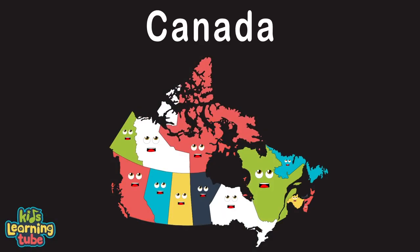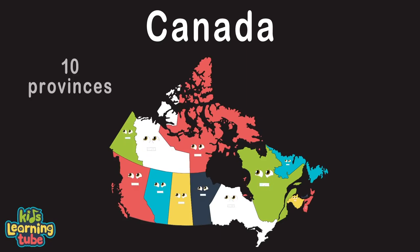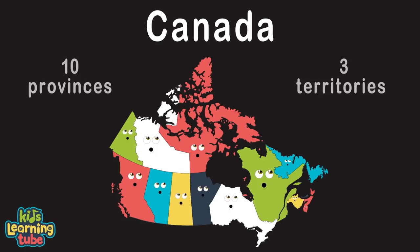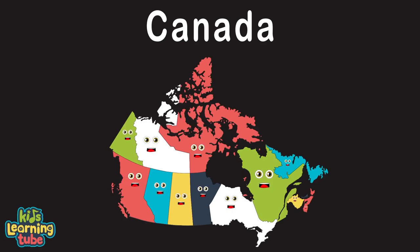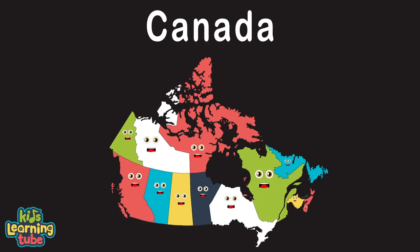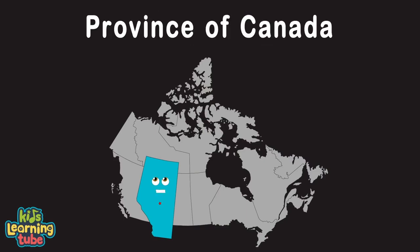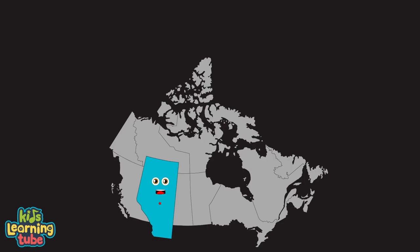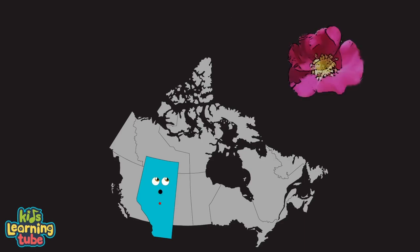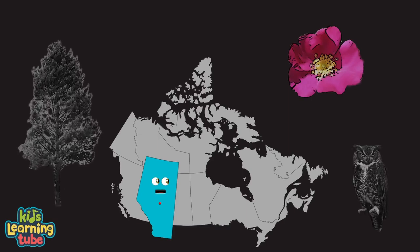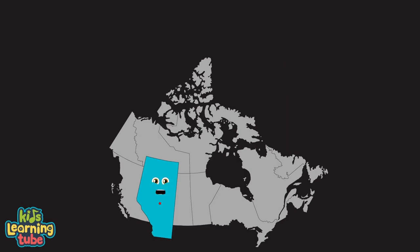We are Canada, made up of 10 provinces and 3 territories with capitals in all. I am Alberta — my capital is Edmonton. I am a province of Canada; my time zone is Mountain. My flower's a wild rose, my tree's the lodgepole pine. My bird's a great horned owl.